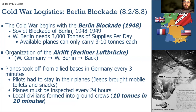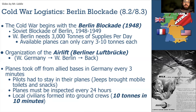Planes flew continuously from West Germany to West Berlin, landing, unloading, then flying back for more supplies. At the peak of the blockade, planes took off from Allied bases every three minutes. Pilots were required to stay in their planes — portable toilets and snacks were brought to them. Planes were inspected every 24 hours. Local civilians volunteered as impromptu ground crews, able to unload 10 tons of cargo in 10 minutes. After about 11 months, the Soviets ended the blockade — a massive logistical victory demonstrating the power of the U.S. military.